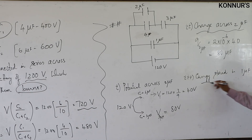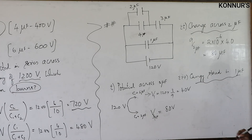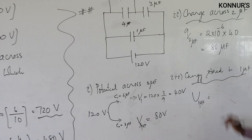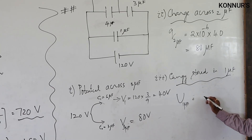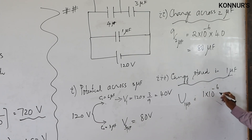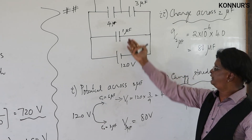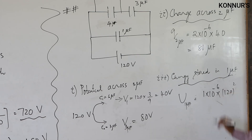Energy stored in 1 microfarad: U = ½CV² = ½ × 1×10⁻⁶ × 120² . The 1 microfarad has all 120 volts across it. Please do this calculation yourself.